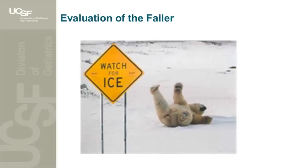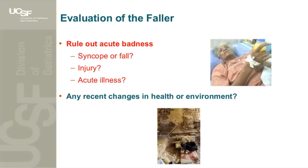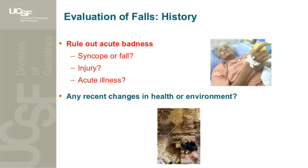Moving on to evaluation of the faller. The first thing to think about when somebody reports a fall is to rule out what I call acute badness. Address syncope first — syncope accounts for only a small minority of falls. I think about falls like delirium: a sign of something else going on underneath that could be serious — for example, urinary tract infection, pneumonia, heart attack, stroke, or medication changes.